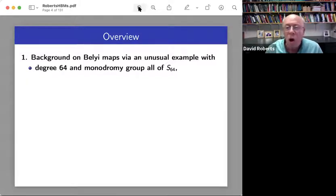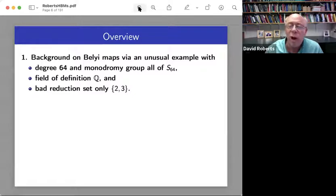So this particular Belyi map is going to have degree 64, relatively large, and monodromy group all of S64. Its field of definition will be the rational numbers. And its collection of bad primes will just be 2, 3.